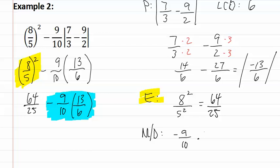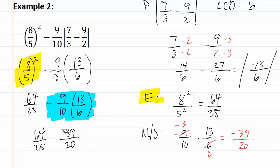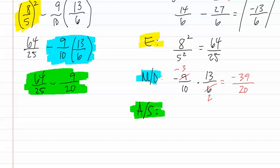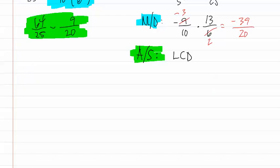We actually have negative nine-tenths times thirteen-sixths, which we can then reduce. Three goes into nine three times, and three goes into six two times. Remember, the negative did not get crossed out. This gives us negative thirty-nine-twentieths, which we put back in the problem. We have now completed the multiply and divide step, so we can move on to add and subtract. Since our denominators do not match, we are going to need to find a least common denominator.